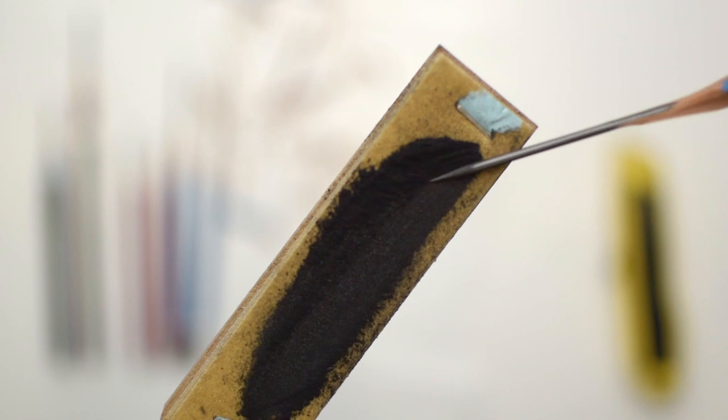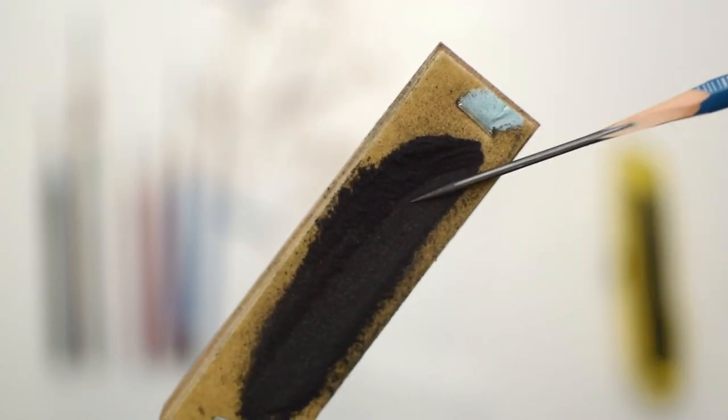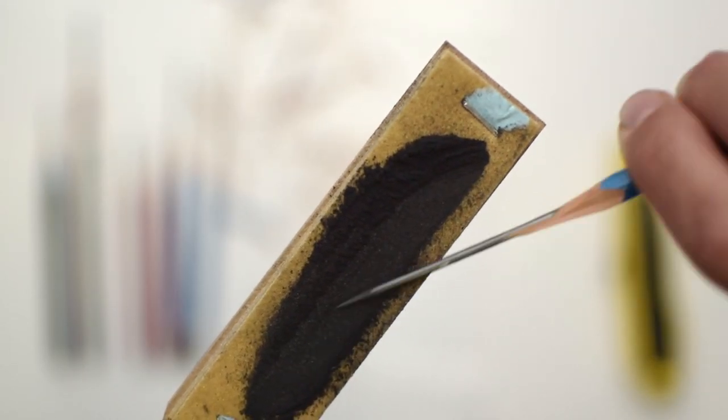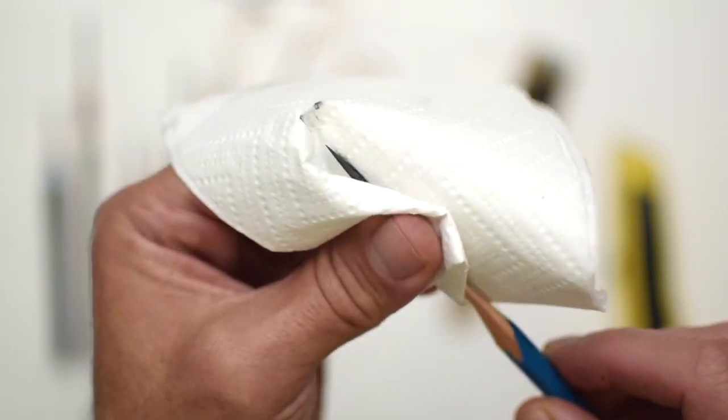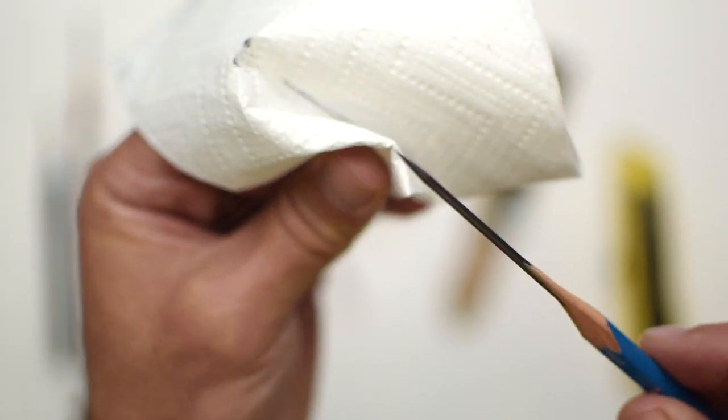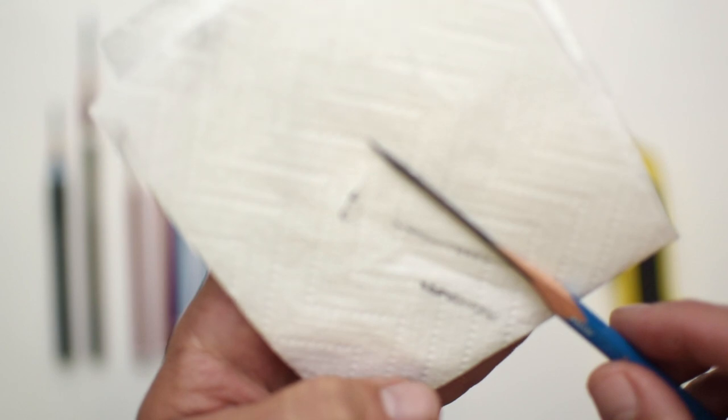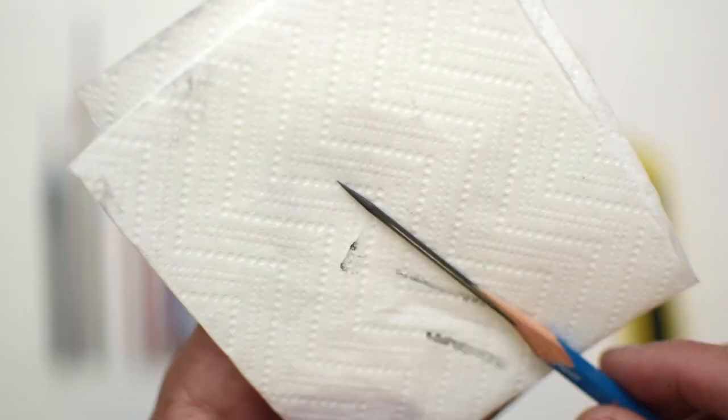And once that's done, take your tissue and wipe away some of the powder because you don't want that on your paper and you'll be left with a point like this.